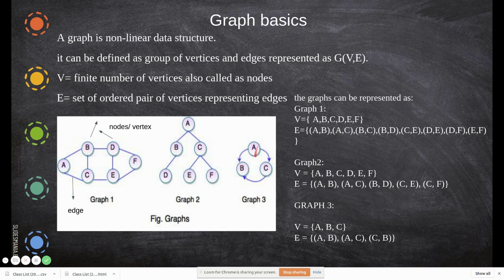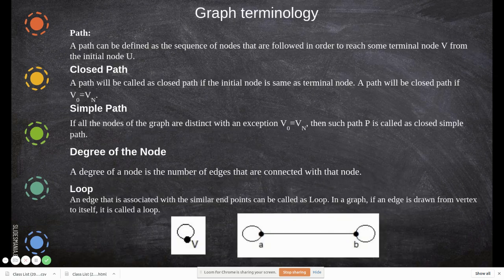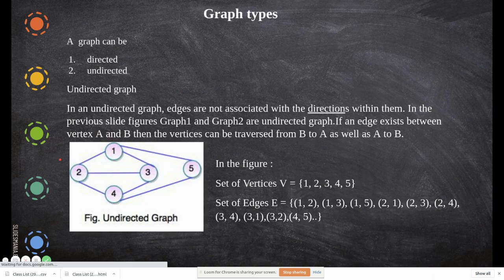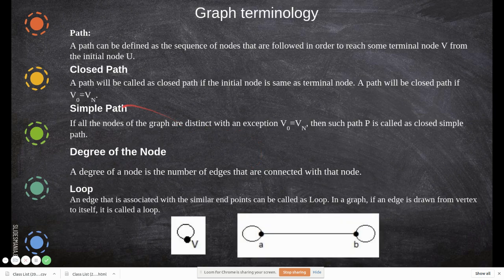A closed path is one where the initial node is the same as the terminal node. For example, if you go A→C→B→A, where A is both source and destination, that is a closed path. The condition is: V-naught (source) equals V-n (target). A simple path is one where all nodes are distinct, with the exception that the source may equal the destination — that special case is called a closed simple path.